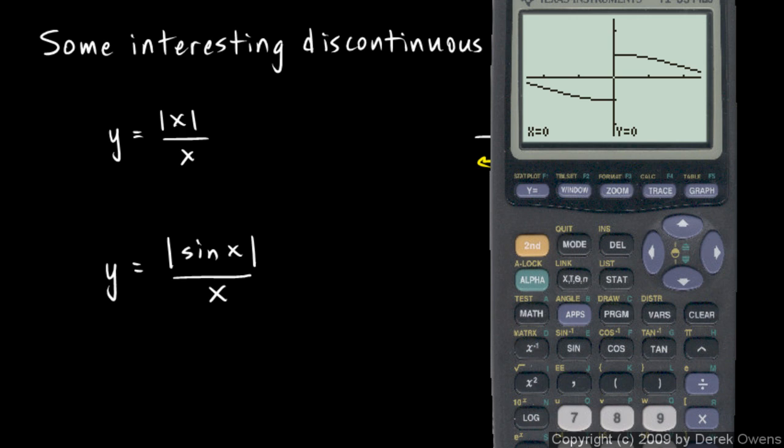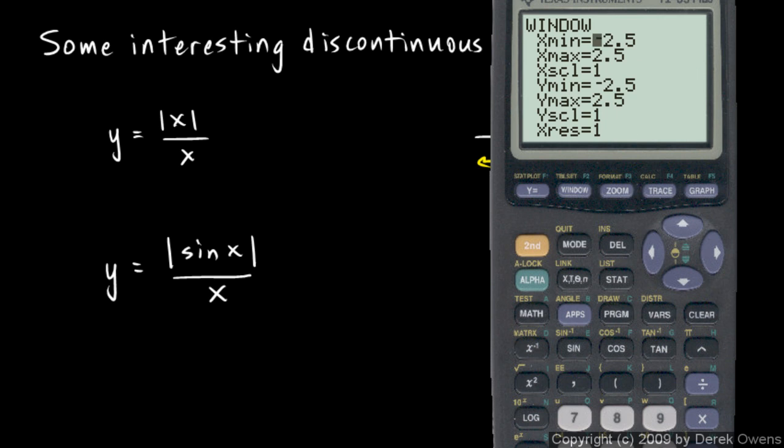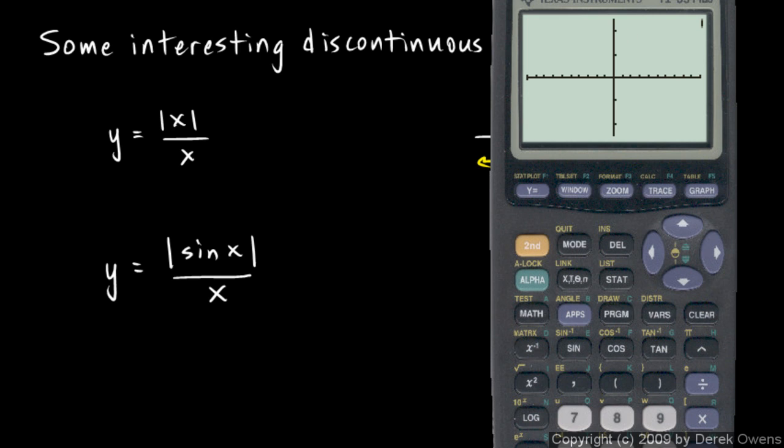But it actually bounces off the axis. On the right side, when x is positive, it actually stays above the axis. And on the left side, when x is negative, it stays below. Let me adjust the window here. I'll change my x to negative 10 and positive 10. We'll keep the y values where they are and graph that. And you see it kind of bouncing there, bounces off the axis.